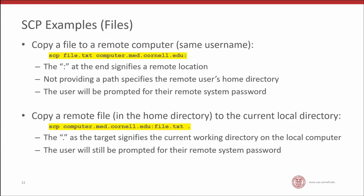To copy in the reverse direction, put the remote location as the source: 'scp computer.med.cornell.edu:file.txt .' — the period means the current local directory. This copies the file from the home directory on the remote computer back to the directory you're currently in. Even if you provided your password moments before, each new command will prompt you again.